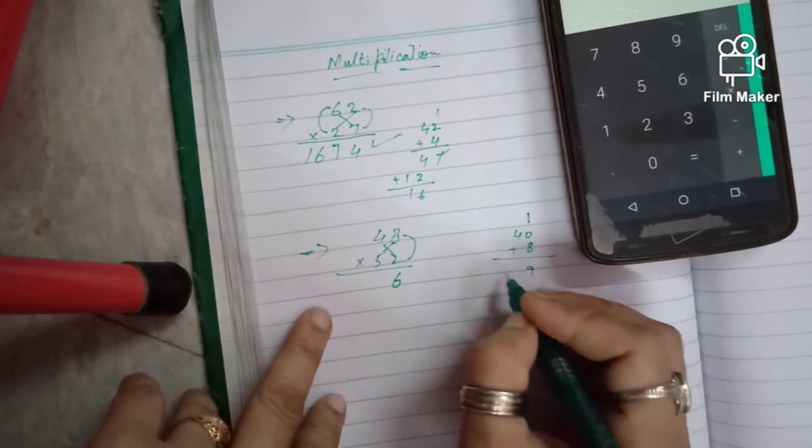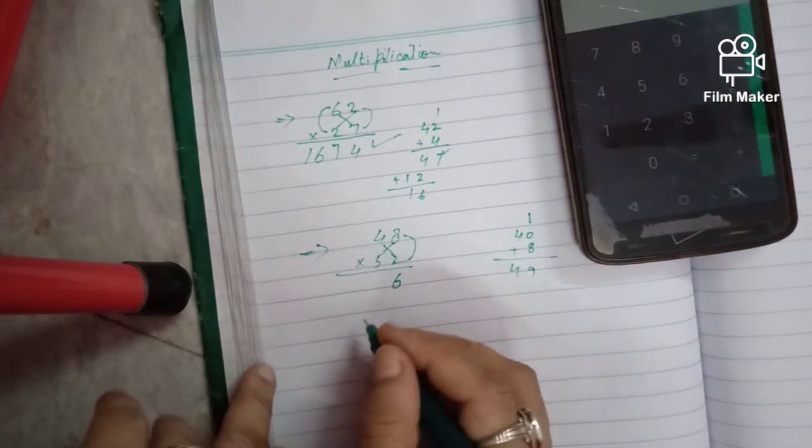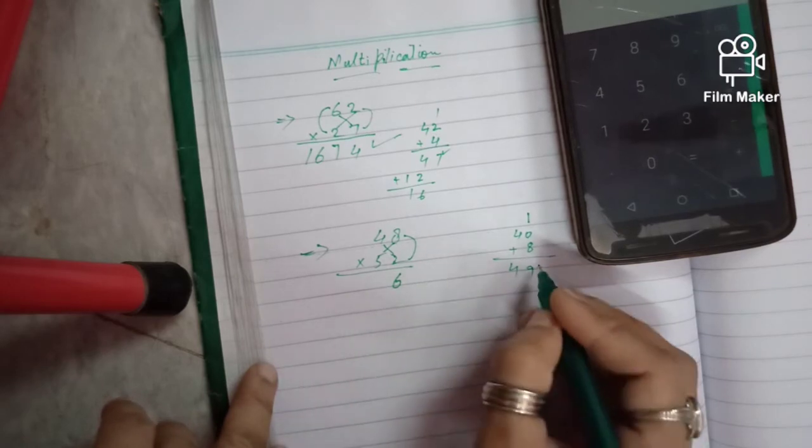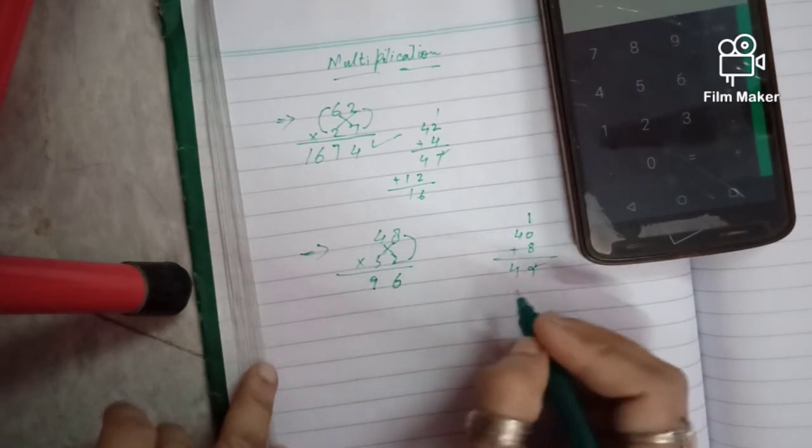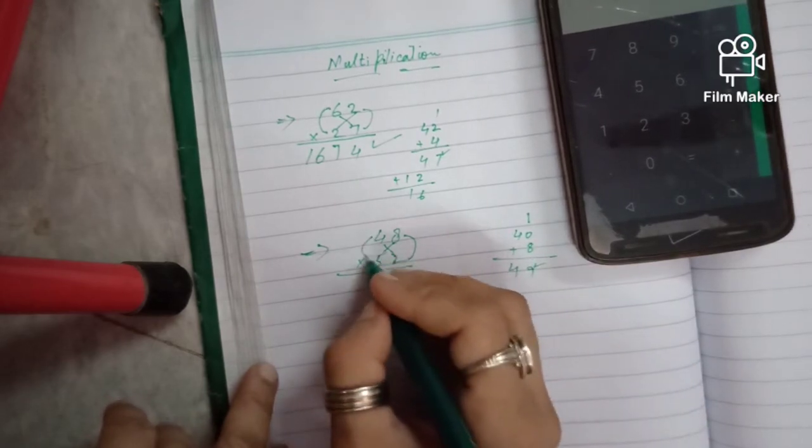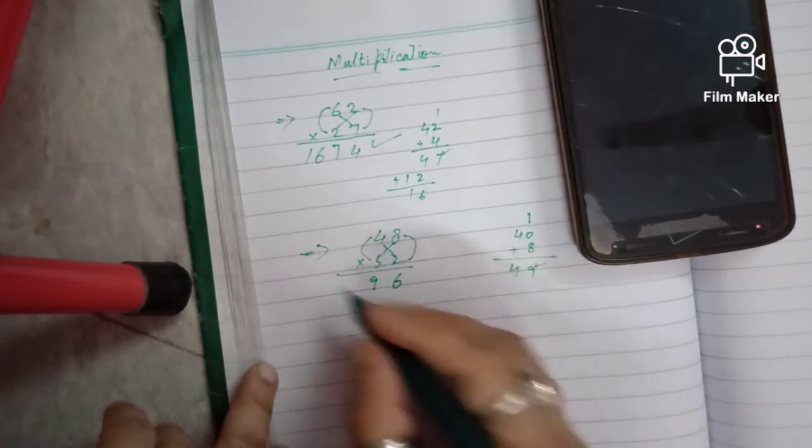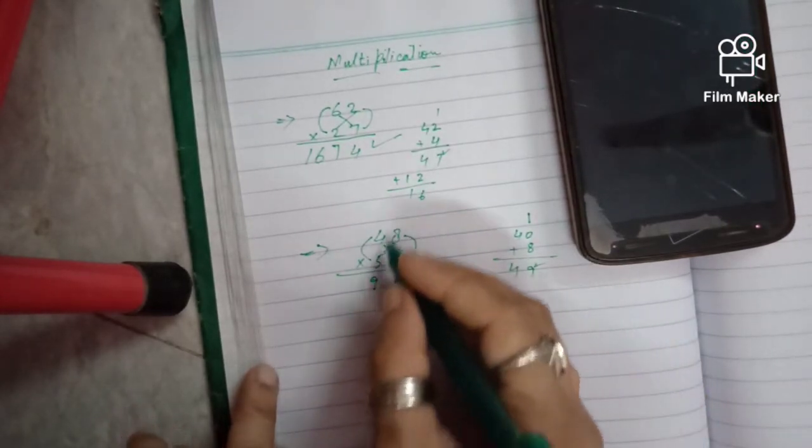...1 is 9 and 4 carry. We will put 9 here. And now we multiply 5 times 4. 5 times 4 is 20.